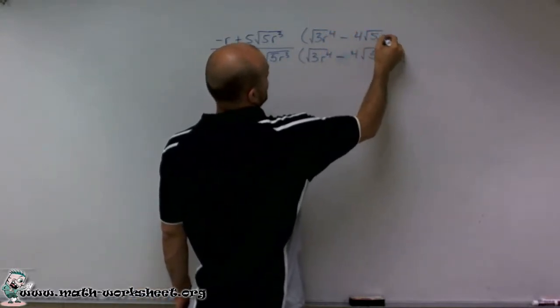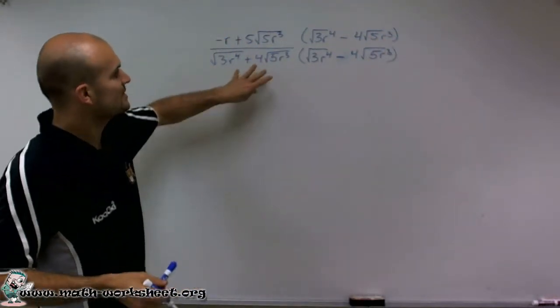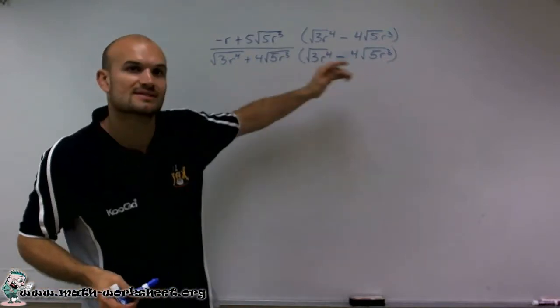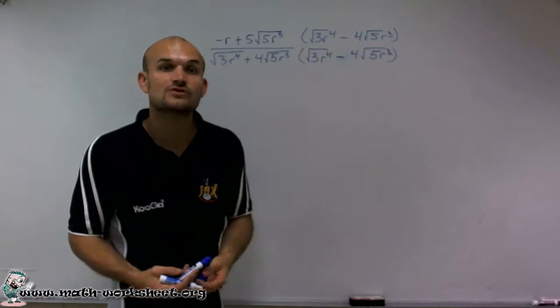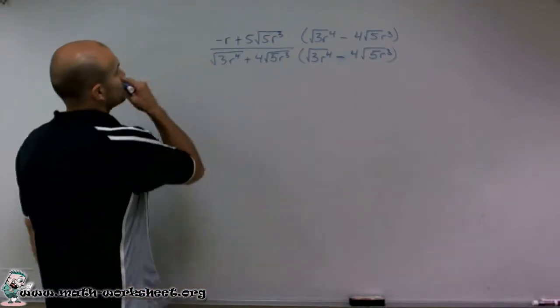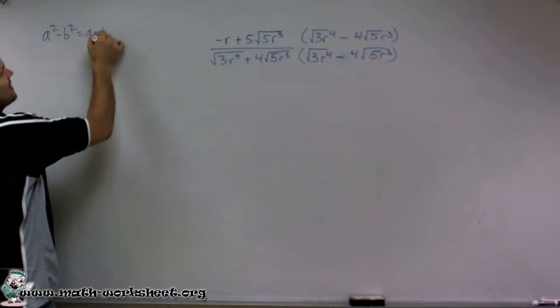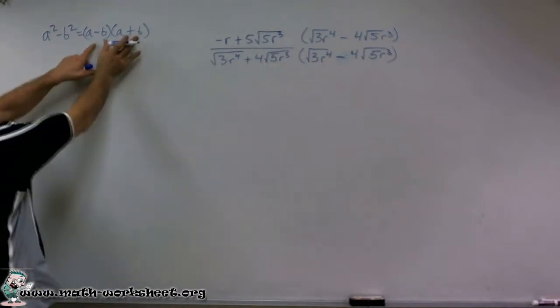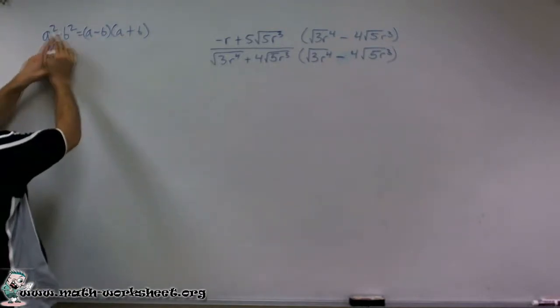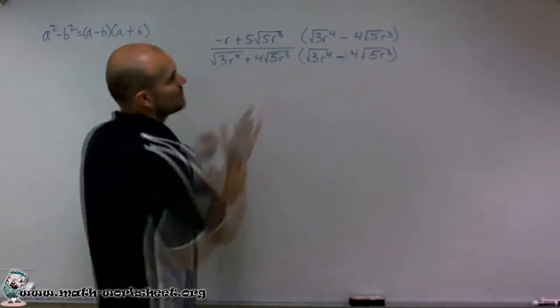So why do we multiply by the conjugate? When we multiply the conjugate, these are the exact two binomials except one's positive and one's negative, which produce the difference of two squares. Difference of two squares says a squared minus b squared equals a minus b times a plus b. So all I need to do is multiply my first two terms and multiply my last two terms, and that will give me the product of my denominator.